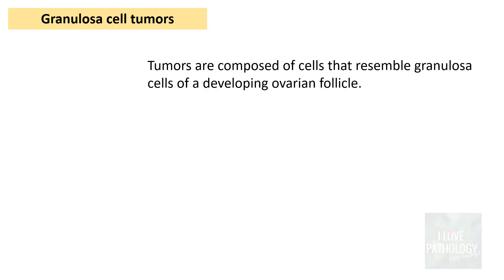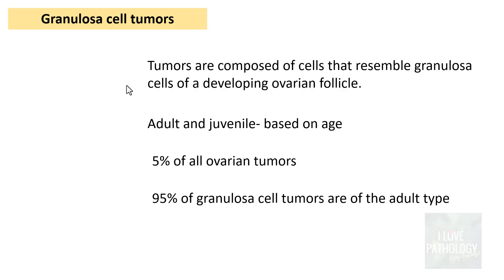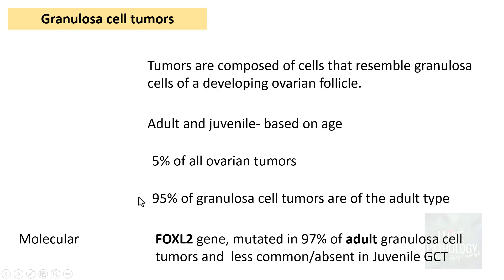Granulosa cell tumours are composed of cells resembling granulosa cells of a developing ovarian follicle, derived from the sex cords. They constitute around 5% of ovarian tumours. 95% of all granulosa cell tumours are of adult type; only around 5% are juvenile type. Molecularly, 97% of adult granulosa cell tumours have the FOXL2 gene mutation, which is less common or absent in the juvenile type, indicating a different pathogenetic mechanism.